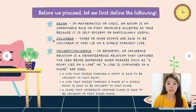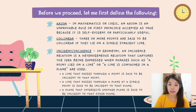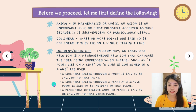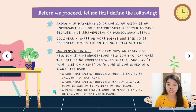Next term is collinear. Three or more points are said to be collinear if they lie on a single straight line. Next term is incident or incidence. In geometry, an incidence relation is a heterogeneous relation that captures the idea being expressed when phrases such as 'a point lies on a line' or 'a line is contained in a plane' are used. A line that passes through a point is said to be incident to that point. A line that passes through a plane at a single point is said to be incident to that plane. Lastly, a plane that intersects another plane is said to be incident to that other plane.